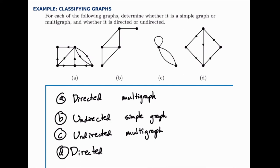And lastly, part D is a simple graph because there are no loops and no multiple edges.